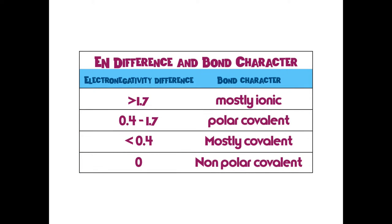Here you have another chart that you'll see in your textbook. This is electronegativity difference and bond character. Again, that word bond character. All that means is, is it ionic, polar covalent, mostly covalent, or non-polar covalent.